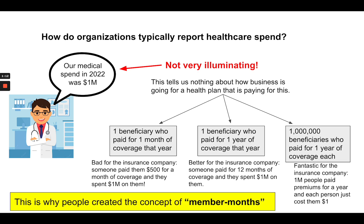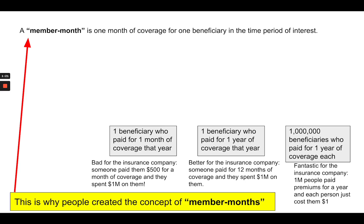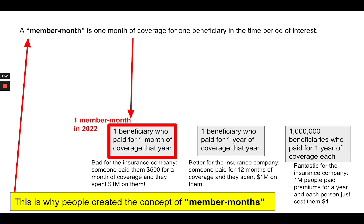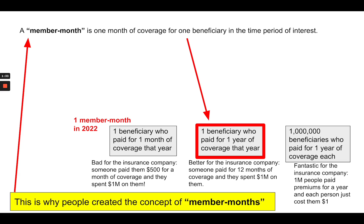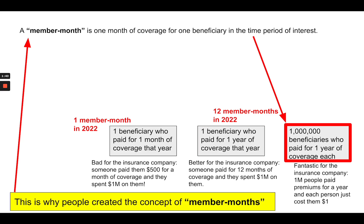Obviously, this is why we need to normalize the way we report spend, and this is why people created the concept of member months. A member month is just one month of coverage for one beneficiary in the time period of interest. So where you had one beneficiary who paid for one month of coverage, you have one member month in 2022. Where one beneficiary paid for a full year, you have 12 member months. And where a million beneficiaries each paid for a full year, you have 12 million member months in 2022.